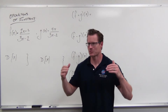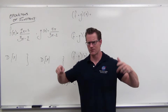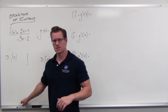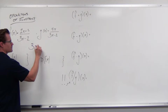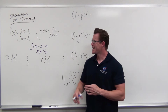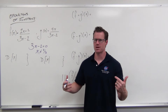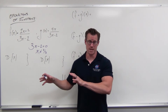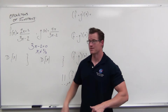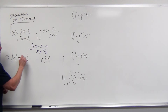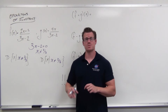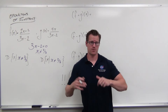Now here both functions have fractions, and after watching the last video you know about fractions. We're looking for inputs that give us a real number defined output, which means denominators equaling zero are bad things. We set our denominator equal to zero and find that when x equals positive two-thirds, that's a problem for us — and it's the same problem for both of these fractions.